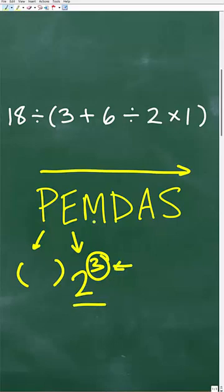The next thing that we need to do is M, D, A, and S. M stands for multiplication, D stands for division, A stands for addition, and S stands for subtraction.